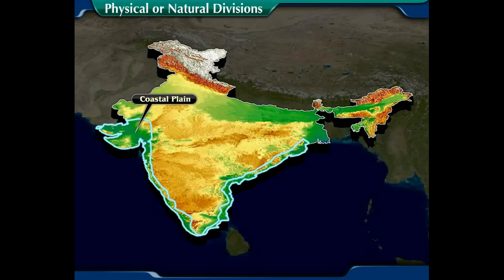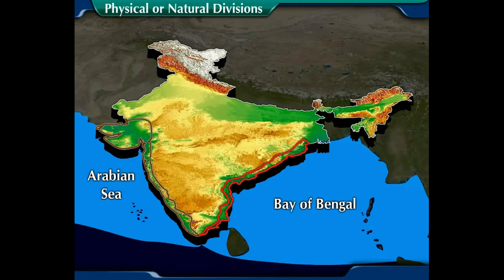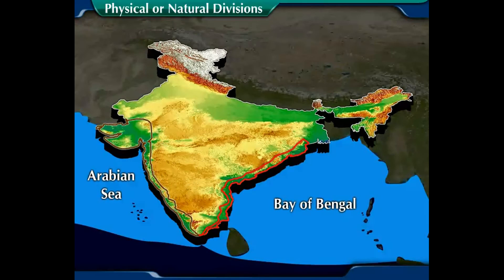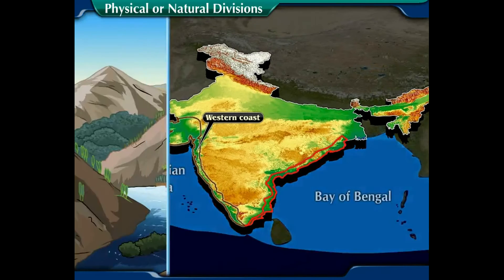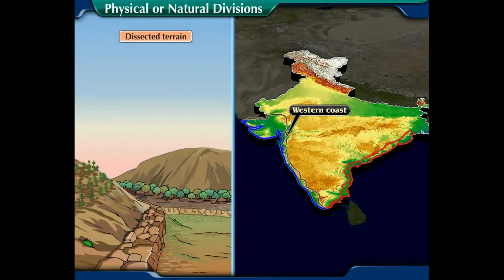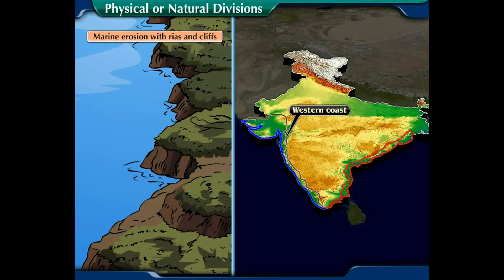The coastal plain refers to low flat areas situated adjacent to water bodies, usually the sea. The coastal lowlands can be divided into two divisions based on location and physiographic conditions. The western coastal plain: the western coast is very narrow due to less depositional action of the rivers, and it stretches from the Arabian Sea to the Western Ghats. It is characterized by seasonal rivers, high relief, dissected terrain, faulted structures, indented coastlines, and marine erosion with rias and cliffs.